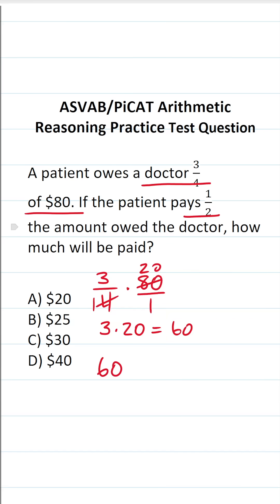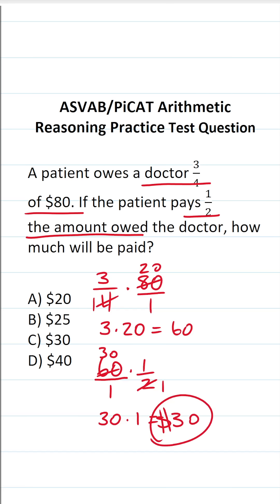And they're going to pay half the amount that they owe, so they're going to pay half of 60. You should be able to do that mentally and say it's going to be $30. But if you haven't worked with fractions in a long time, you could write 60 as a fraction by placing it over one. This enables you to cross-reduce: two goes into two one time, two goes into 60 thirty times. This becomes 30 over one, which is 30. So if the patient is going to pay half the amount they owe and they owe $60, then they're going to pay the doctor $30.